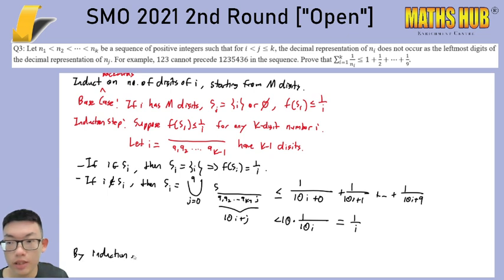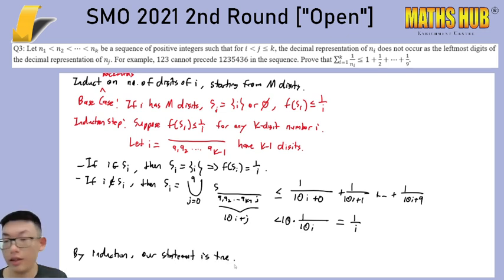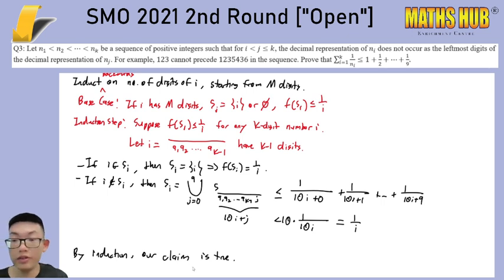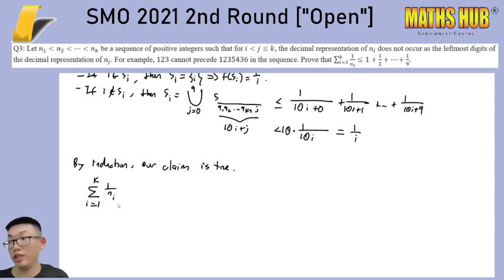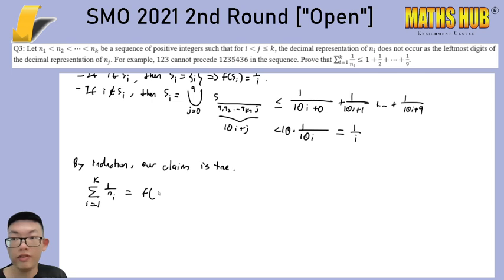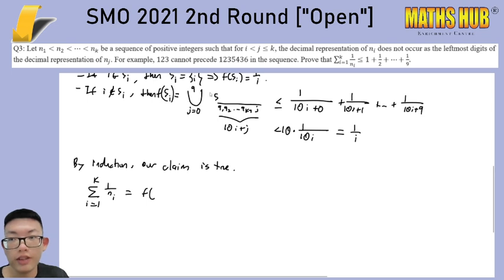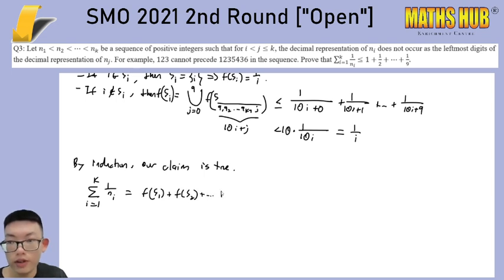So by induction, our claim is true. And if our claim is true, then going back to the starting sum — the sum consists of some numbers starting with 1, some starting with 2, some starting with 3, up to 9. So the total is f(S_1) + f(S_2) + ... + f(S_9), which is less than or equal to 1 + 1/2 + 1/3 + ... + 1/9, which is precisely the required right-hand side.